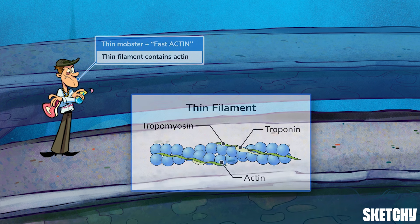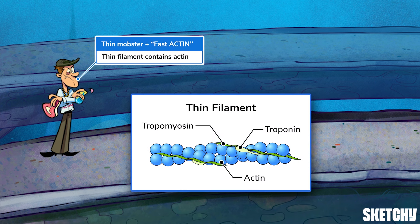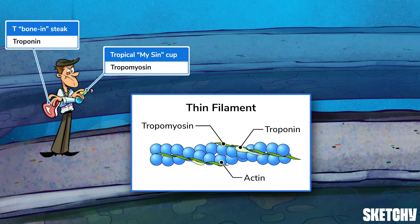This thin mobster from the fast actin club represents thin filaments in the sarcomere of a muscle cell. Thin filaments are mostly made of long strands of actin, but they also contain bound troponin and tropomyosin. This guy — let's call him Slim — is holding a bone-in T-bone steak to represent troponin, and his tropical cup from the myosin club represents tropomyosin. At rest, tropomyosin wraps tightly around actin and covers myosin binding sites, and troponin is bound on top of tropomyosin and keeps it in place.